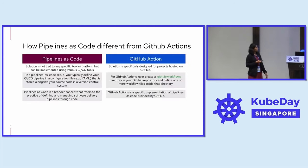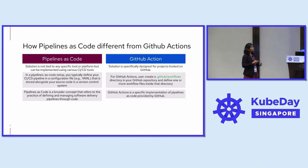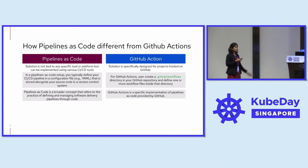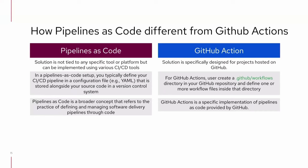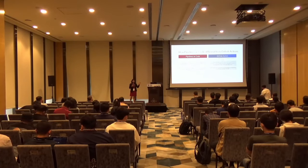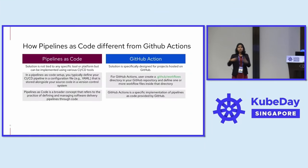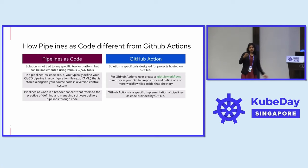This is a comparison of Pipelines as Code versus GitHub Actions, since most of us are familiar with GitHub Actions. But if I have a scenario where I want to run CI/CD for GitLab, Bitbucket, and GitHub, I need different CI solutions for different source code management. If I use Pipelines as Code instead, I can remove all those dependencies. A GitHub user is comfortable with GitHub Actions workflow, but when their codebase moves to GitLab, they have to learn a new CI tool. With Pipelines as Code, it is common across all source code management systems, so that overhead is removed.